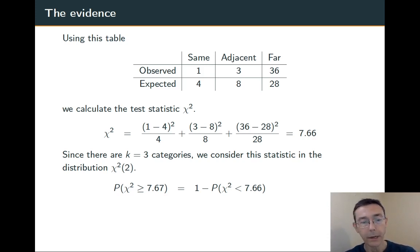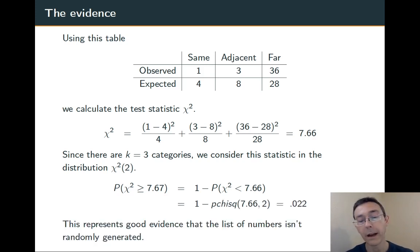So we compute that probability by doing 1 minus the probability of getting a chi-squared value less than 7.66. That's the chi-squared CDF. We can do that in R with the pchisq command. The arguments are 7.66, the critical chi-squared value, and 2, the number of degrees of freedom.